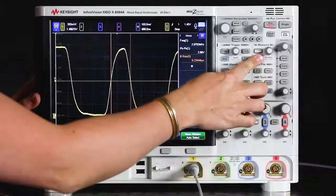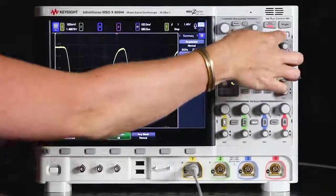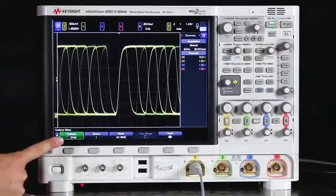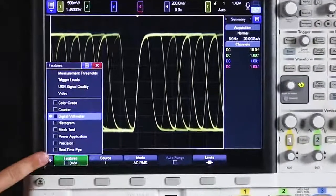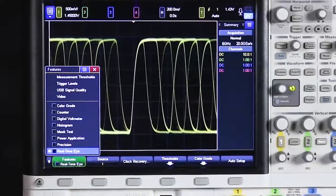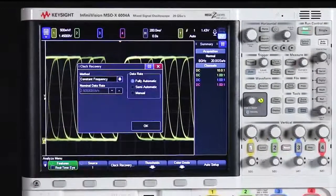So the first thing I want to do is turn off my measurements and press auto scale. And then we can go into the analyze menu. And in here we're going to go to features and select real time eye, but we don't want to turn it on yet. So we only want to select it once. Then we'll go into the clock recovery menu.